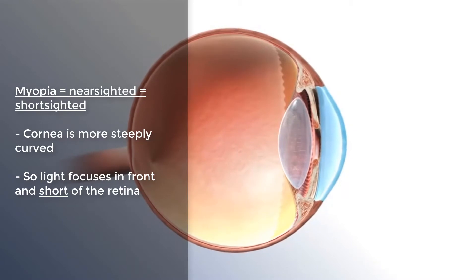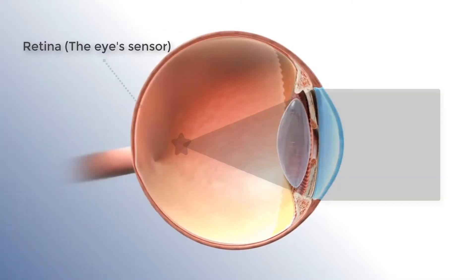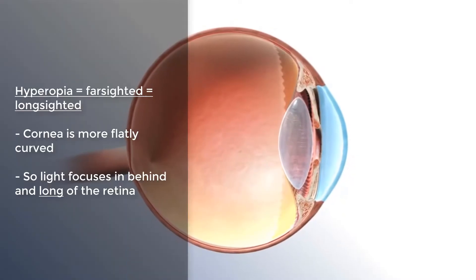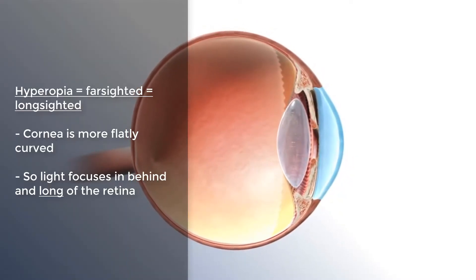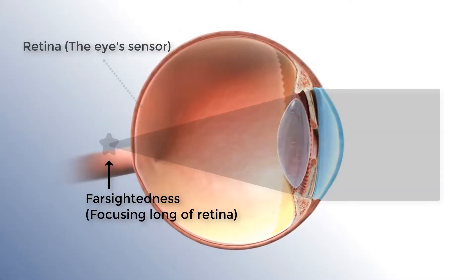Nearsightedness is also referred to as being shortsighted or myopic, and it refers to the fact that light focuses in front of the retina — you can think of it as having sight for short distances. Farsightedness, on the other hand, is also referred to as being longsighted or hyperopic, and this is when light focuses along or behind the retina — having sight for longer distances, meaning in theory you have problems seeing close up but you're fine seeing further away.